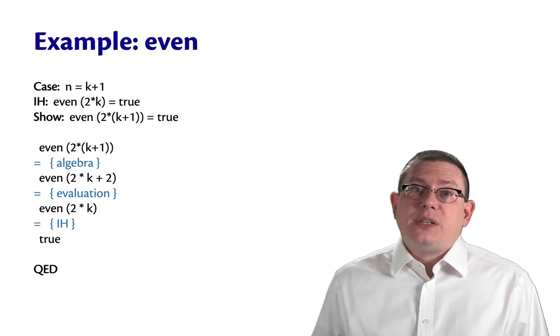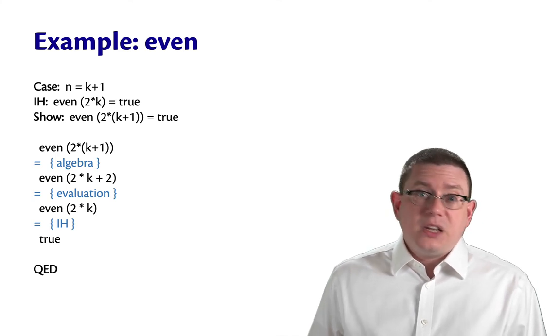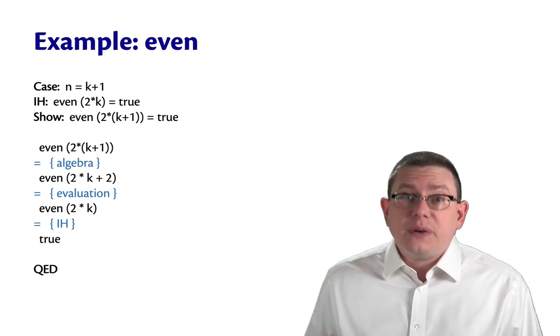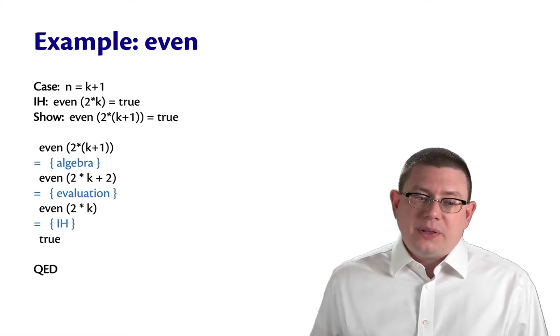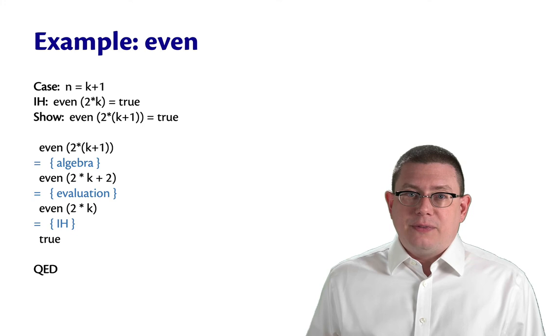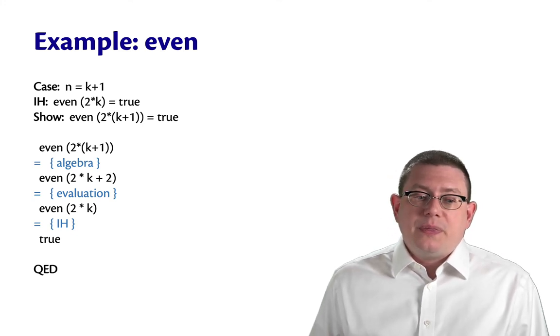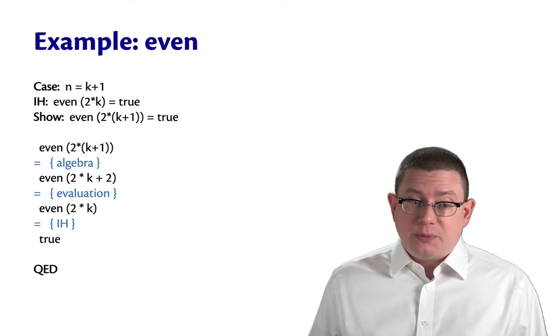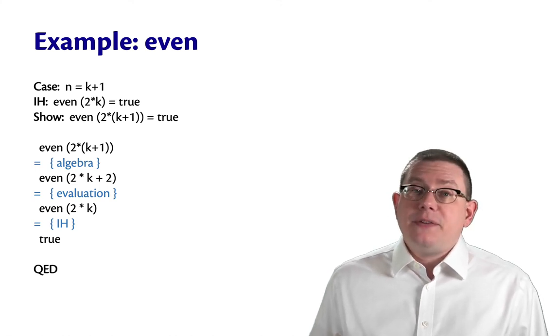Because even is going to pattern match against the argument that's passed in. And it's not going to be 0 or 1 because K had to be a natural number here, right? So K was at least 0. Therefore, the value being passed even here is at least 2. So that's going to evaluate to its argument minus 2. That's how even was defined. So now we have even of 2 times K.